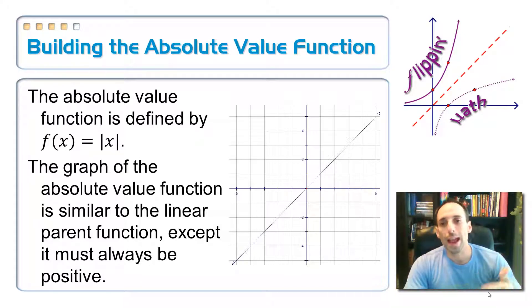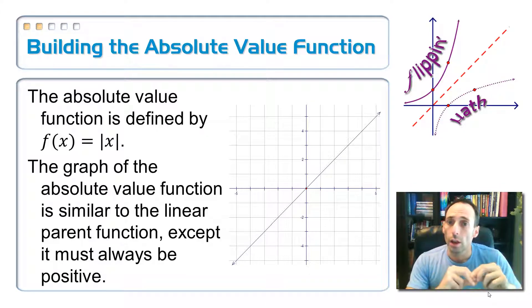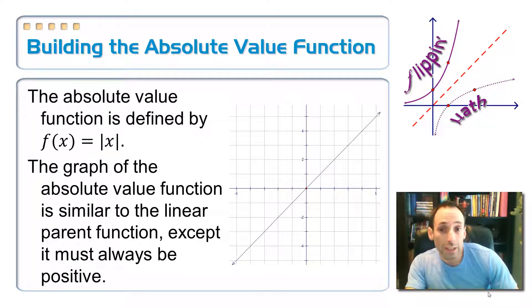So the graph of the absolute value parent function is very similar to the graph of the parent function for a linear function, which is y equals x, which you see graphed there. However, absolute value, whenever you evaluate it, it's always got to be positive.